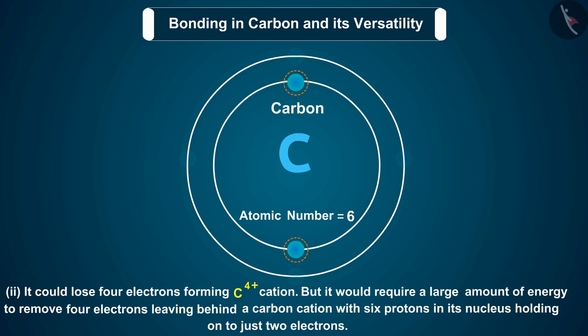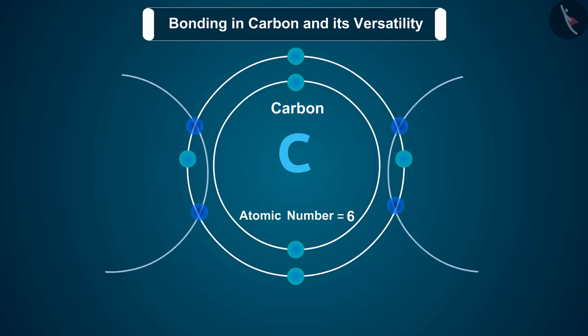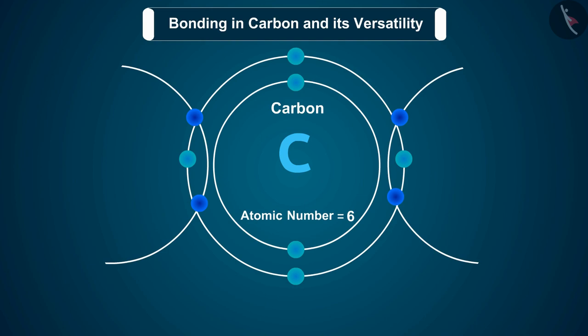Carbon overcomes this problem by sharing its valence electrons with other atoms of carbon or with atoms of other elements. Carbon atom has four electrons in its outermost shell, so it requires four more electrons to achieve the noble gas configuration, which it gets by sharing electrons. Since one carbon atom requires four electrons to achieve the nearest noble gas configuration, therefore it has a valency of four. That is, carbon is tetravalent.